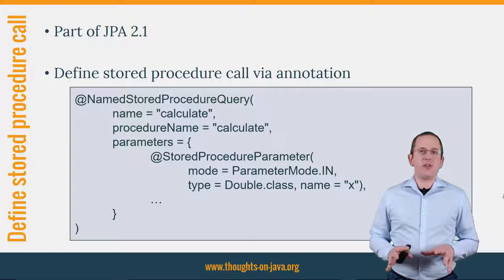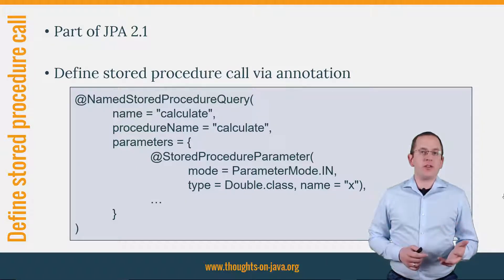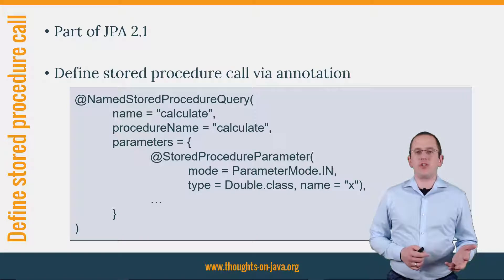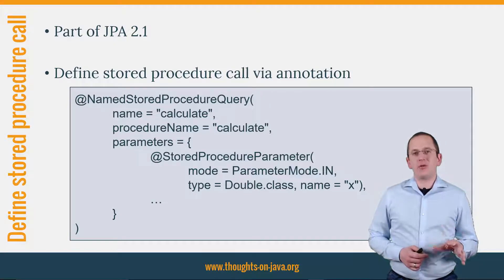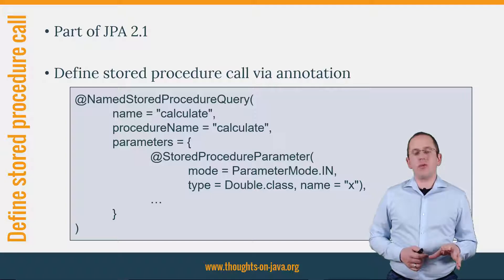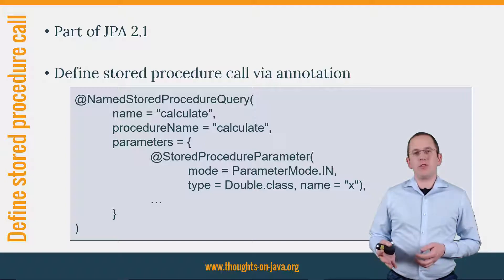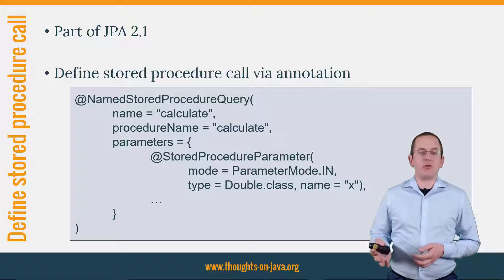Until JPA 2.0, you had to use a native SQL query to call a stored procedure. Since version 2.1, you can also do that with a named stored procedure query. The code snippet on this slide shows an example of a named stored procedure query annotation.